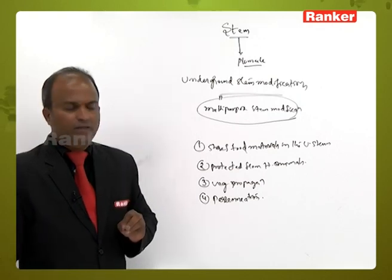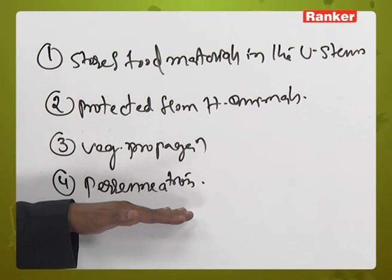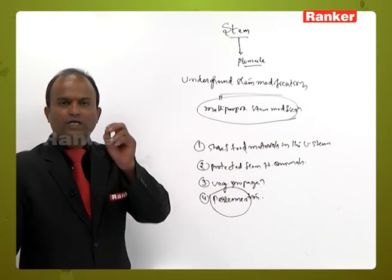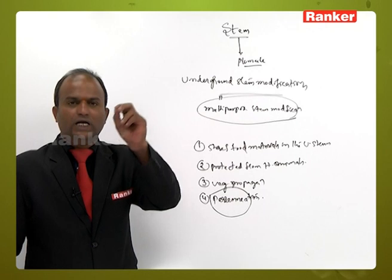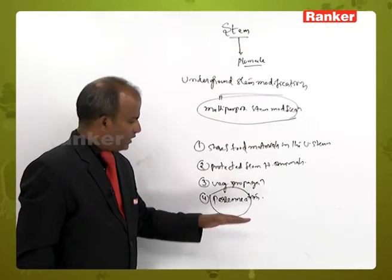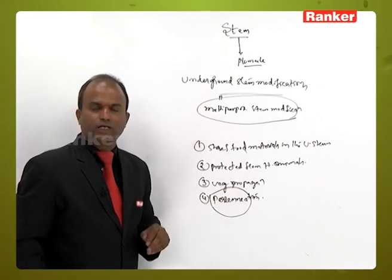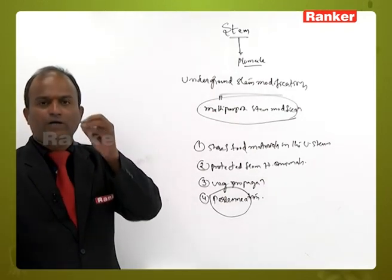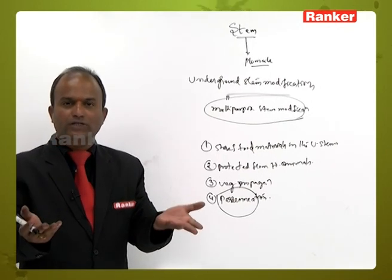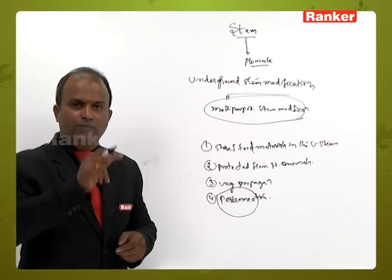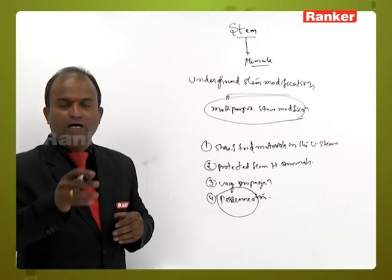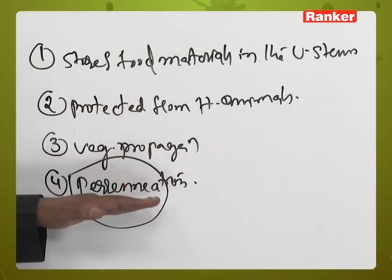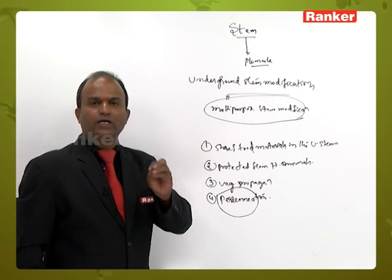What is meant by perennation? In this word we can see the word 'perennials.' Perennials are plants which complete their life cycle for more than two years. If these underground stems face unfavorable conditions, at that time no food preparation occurs, but the plant can survive by utilizing the food materials stored in the underground stems. So it leads a perennial life.